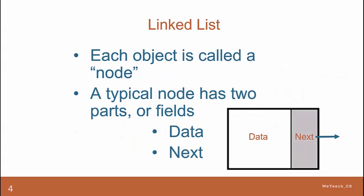Each object, often referred to as a node, has two main parts or fields: the data field and a link field that points to or references the next object, as you can see here in this diagram.